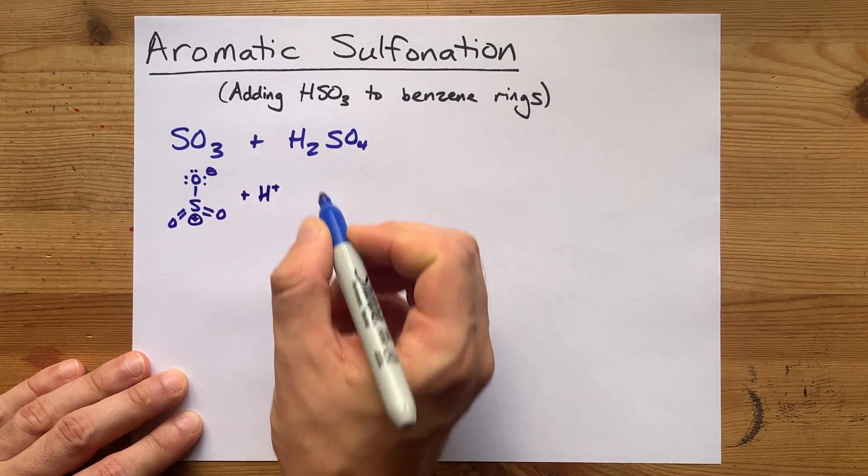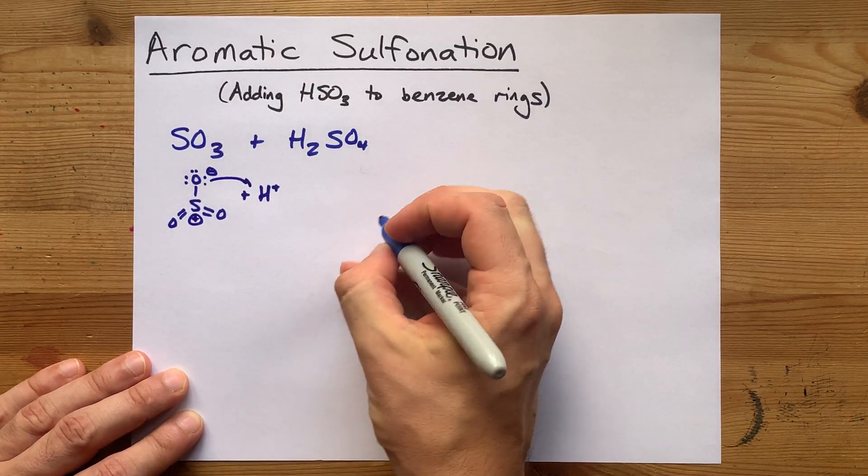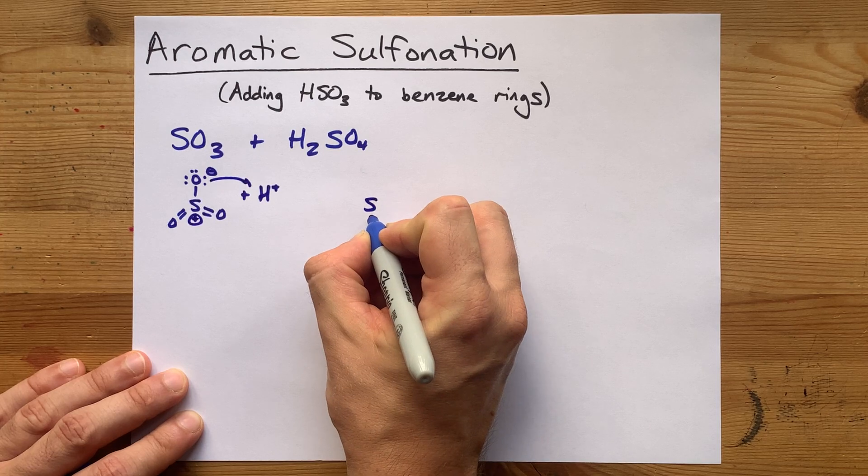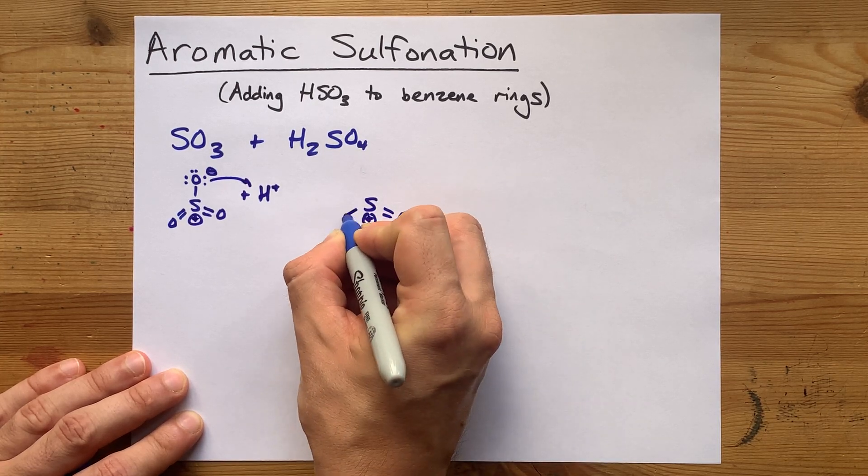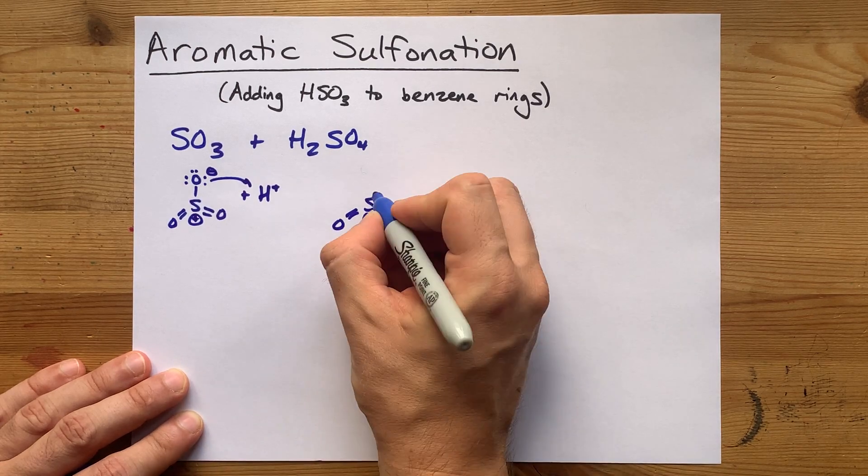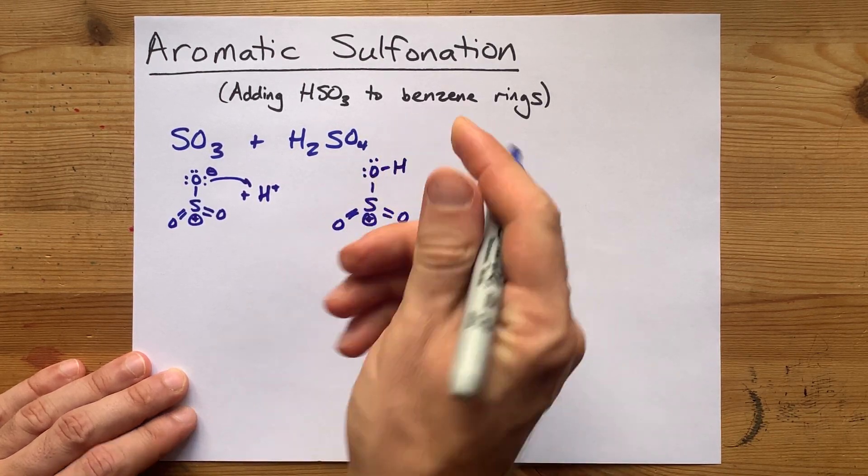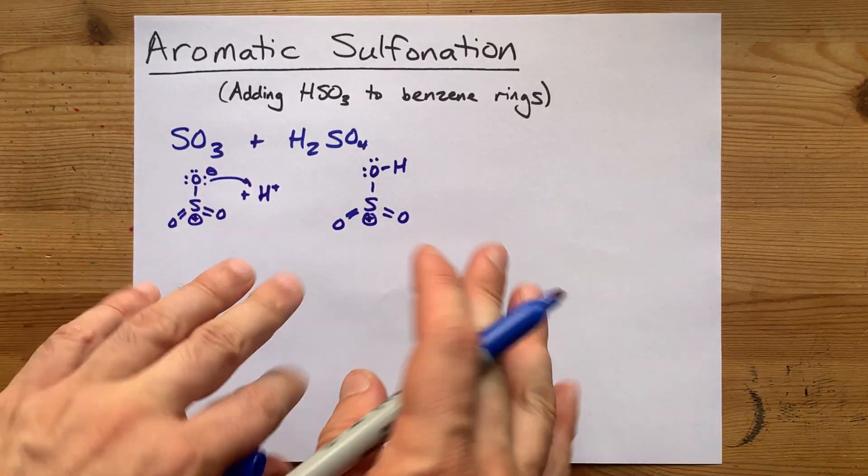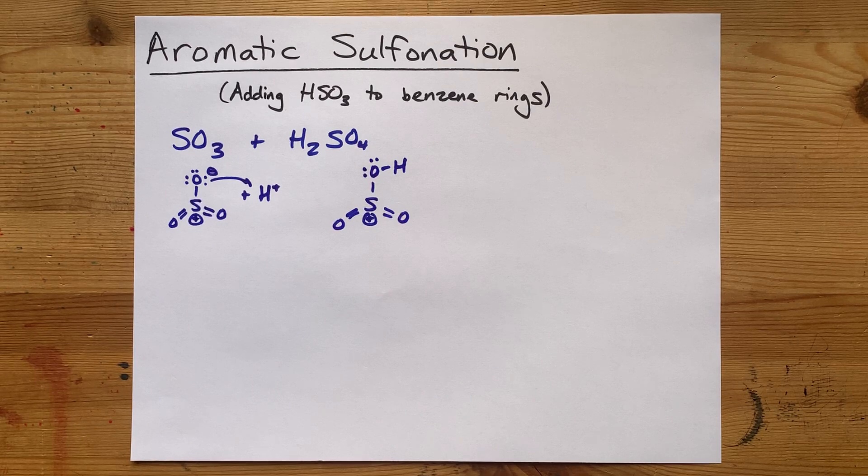When you add the H plus or the H from the H2SO4, you end up with a sulfur that still has its positive one formal charge, is still double bonded to two oxygens, but now is bonded to an OH group. Calling it an OH group is not the right thing to do, but it might help you remember how to structure this.